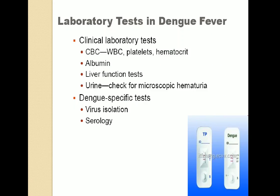For lab diagnosis of dengue fever: first, a blood test — CBC — where we check the count of WBC, platelets, and hematocrit. We also check albumin level, liver function tests, and in urine we check for microscopic hematuria (presence of blood in urine). Dengue-specific tests are also available in which virus isolation can be checked.